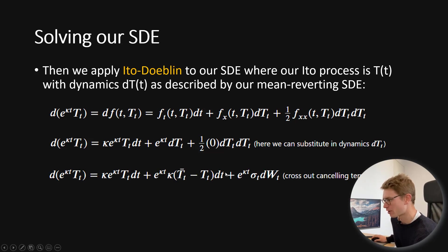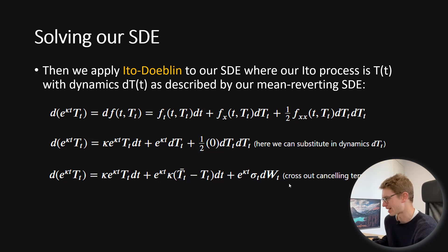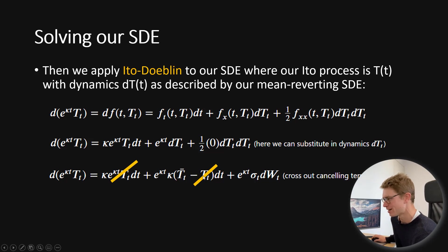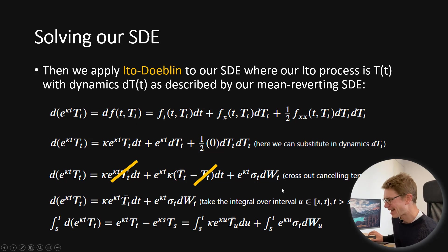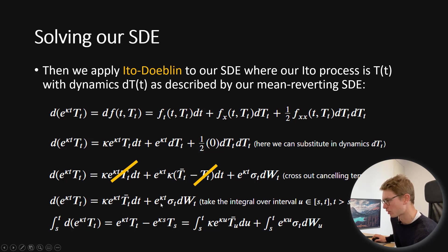Substituting in the dt dynamics gives us the drift term of the SDE. We get our drift term multiplied by the integrating factor plus the integrating factor multiplied by the diffusion term. We can now cancel terms: this part of the drift term of temperature cancels with the drift term from the Itô-Doeblin formula. We're left with one single drift term with respect to the average temperature, plus our diffusion term multiplied by the integrating factor.